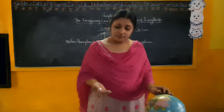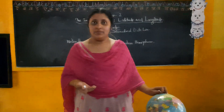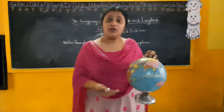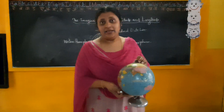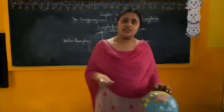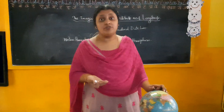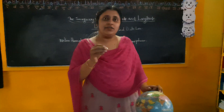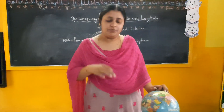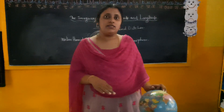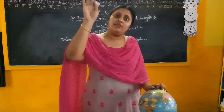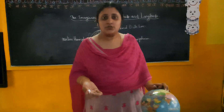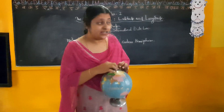Longitudes help us to calculate the time of a particular place. We all know that 7 continents are there, and in those 7 continents, there are many countries and nations. Every continent's countries have different, different timings. Suppose in our country it is 12 pm or 12:30 pm, but in America it is night time. So timing is different in every continent.